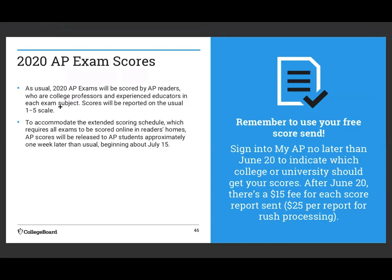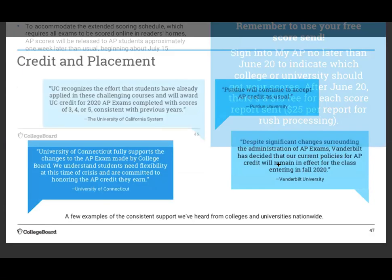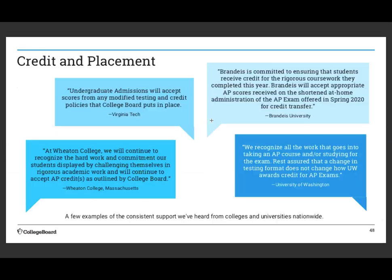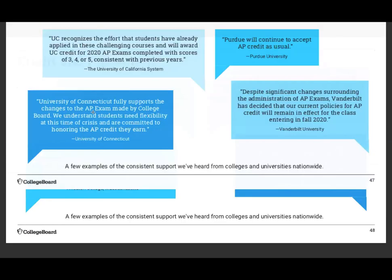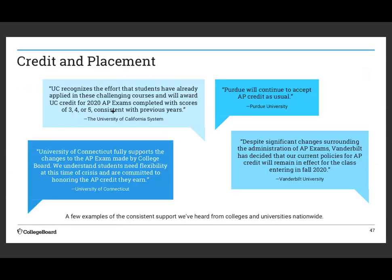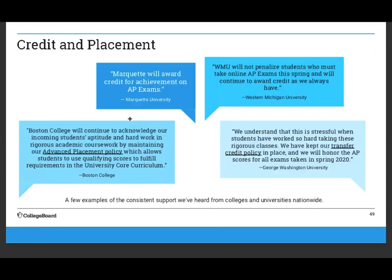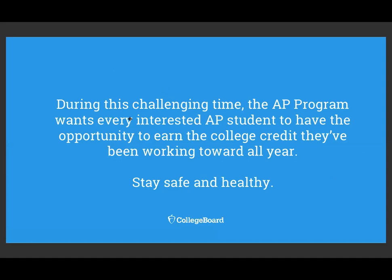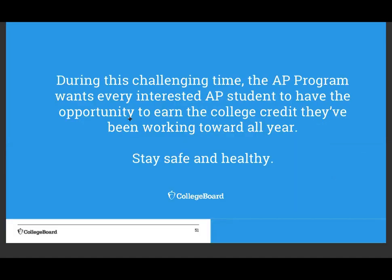Scores are given from 1 through 5 as usual. You can request before June 20th which college or university you'd like to send your scores to. You can get credit at many schools, including the UC system — a score of 3, 4, or 5 will earn you credit.